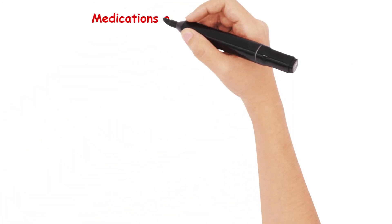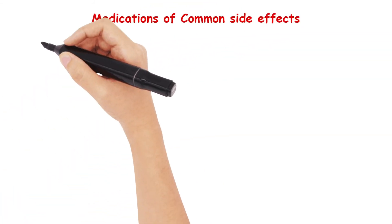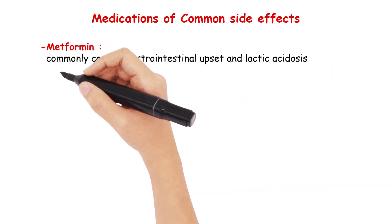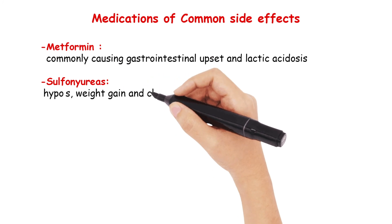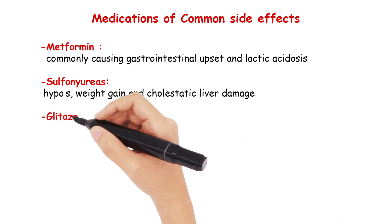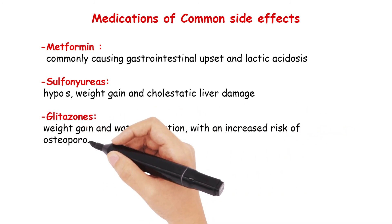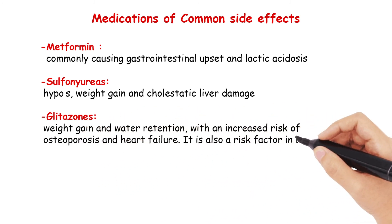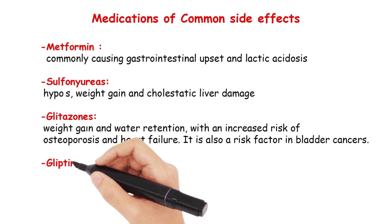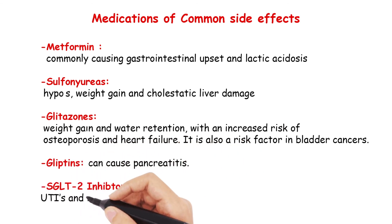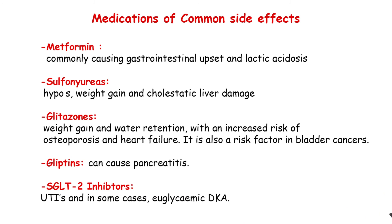We also need to be aware of common side effects of these medications. Metformin commonly causes gastrointestinal upset and lactic acidosis. Sulfonylureas cause hypoglycaemia, weight gain, and cholestatic liver damage. Glitazones typically cause weight gain and water retention, with an increased risk of osteoporosis, heart failure, and bladder cancer. Gliptins can cause pancreatitis, while SGLT2 inhibitors cause frequent UTIs and, in some cases, euglycaemic DKA.